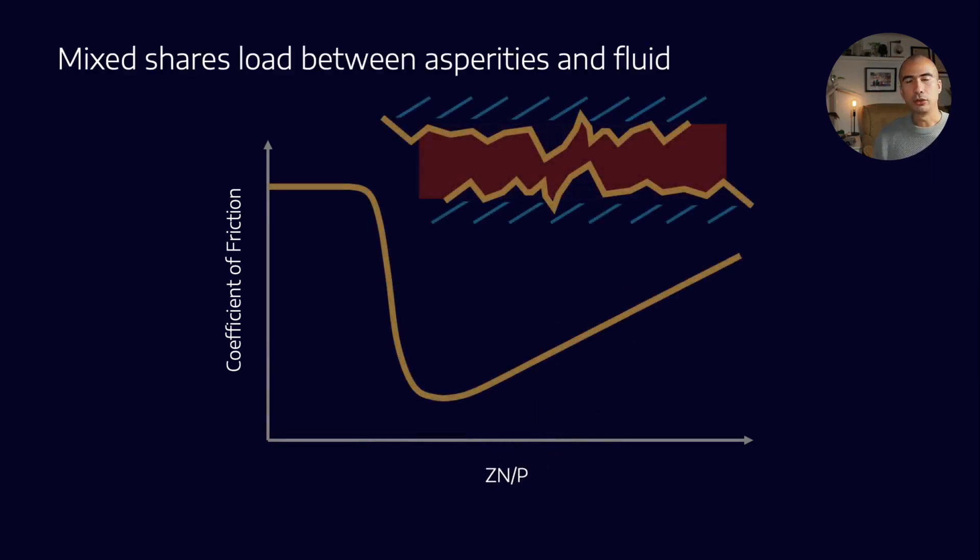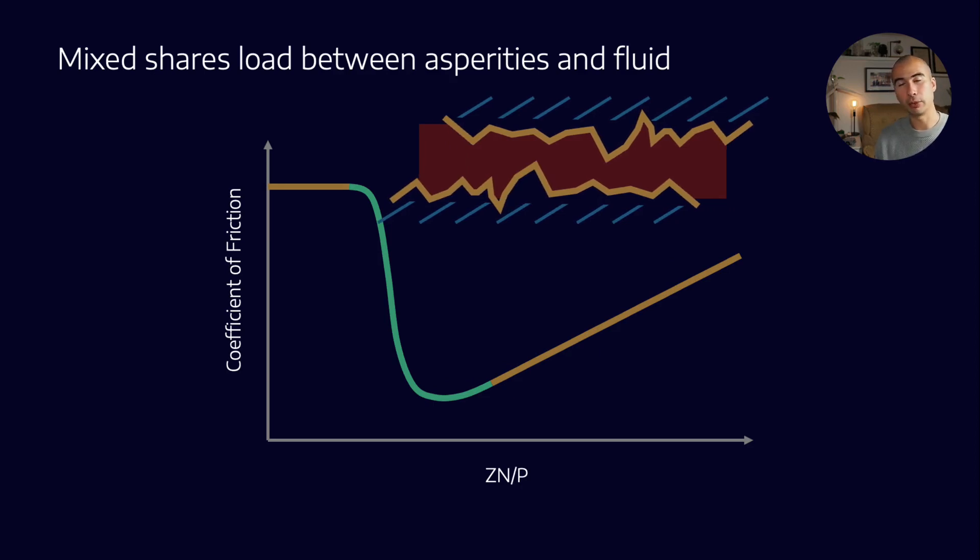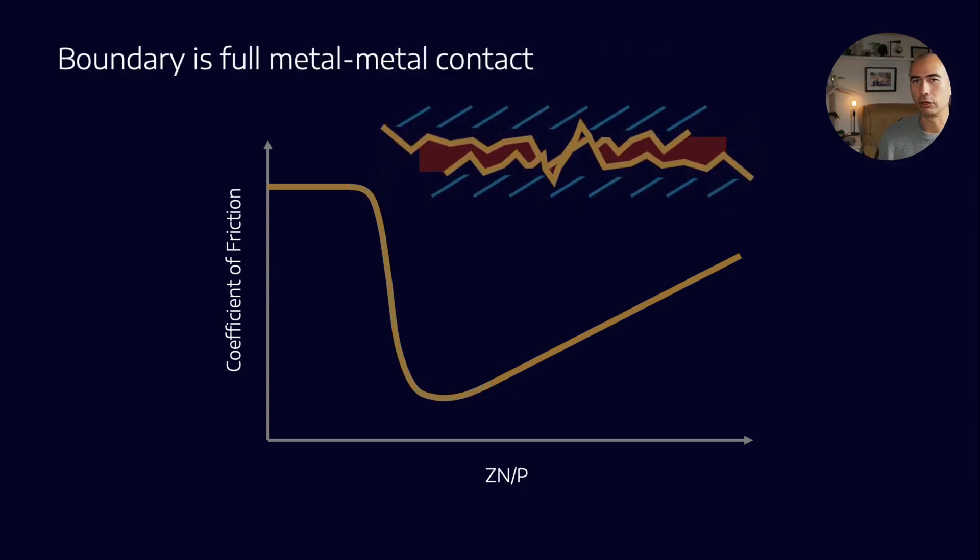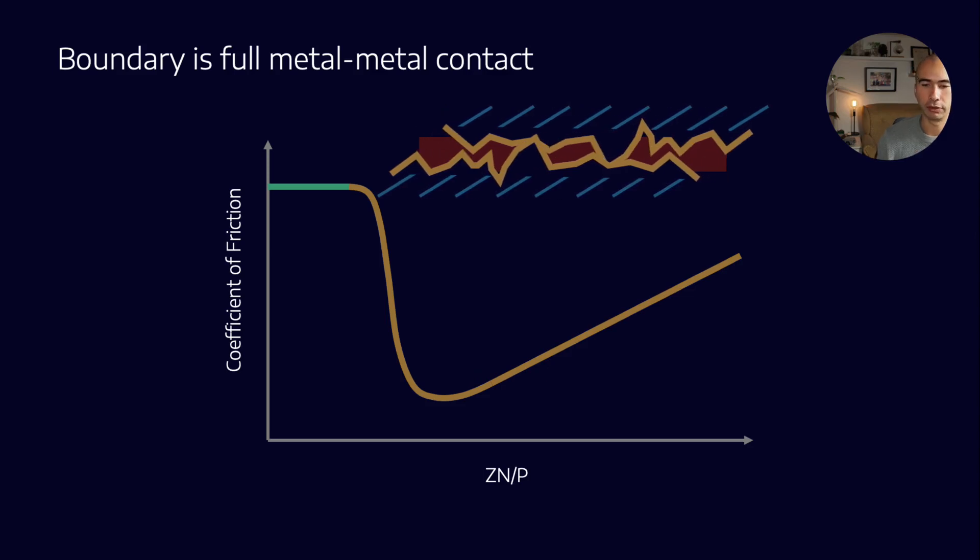So if you remember, back to our descriptions of both the mixed and boundary film lubrication. Mixed lubrication is one in which the load is shared between both the fluid as well as the surface asperity. So if you imagine two surfaces sliding between each other, some of the load is being carried by the liquid lubricant film and some is going to be by the actual surface itself. When you start to get into boundary lubrication, we've got full metal to metal contact. And as it slides past each other, all of that load is really being taken by the metal surface.